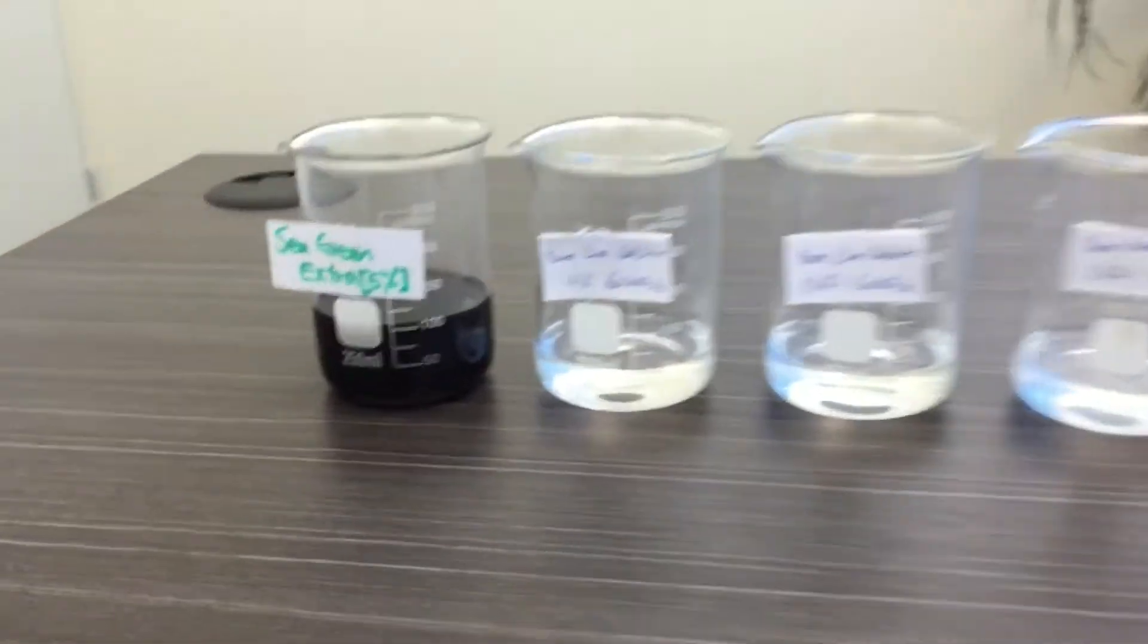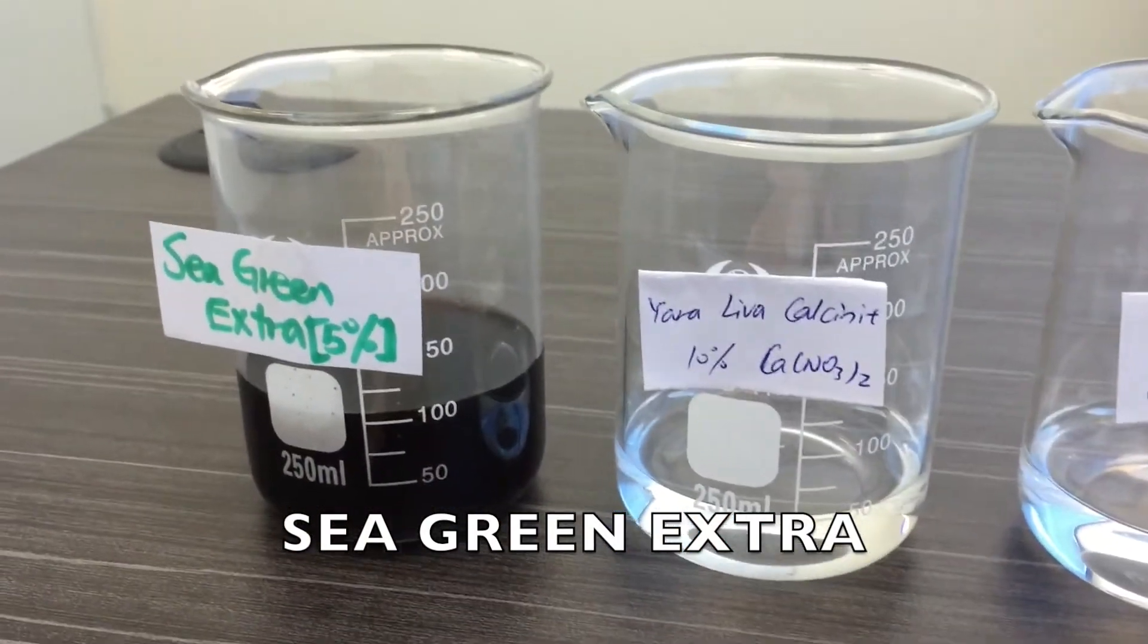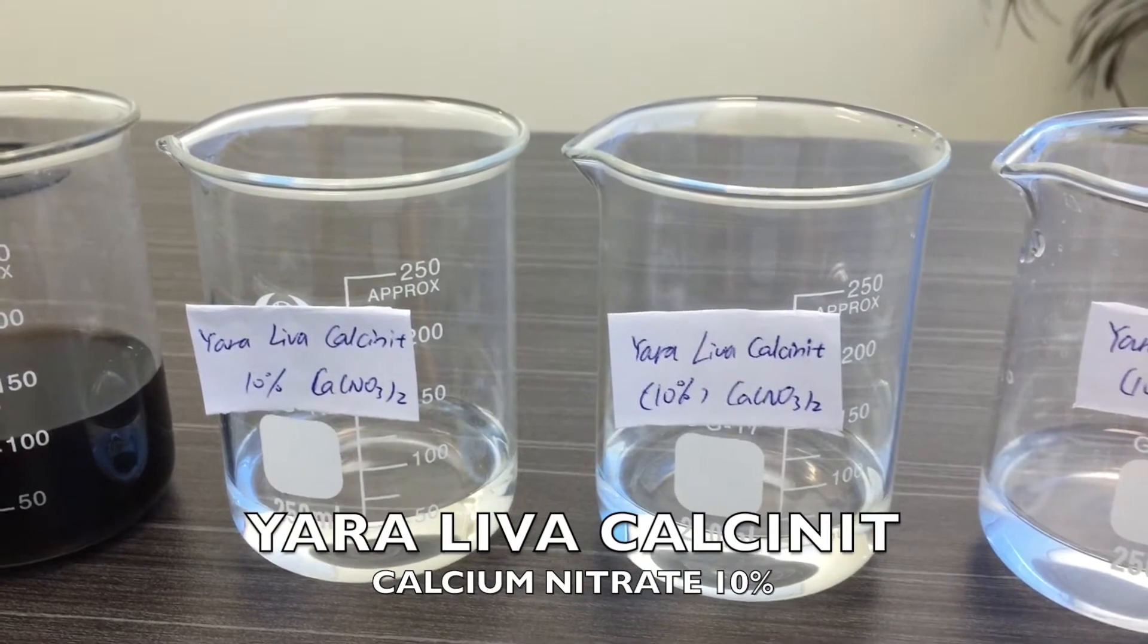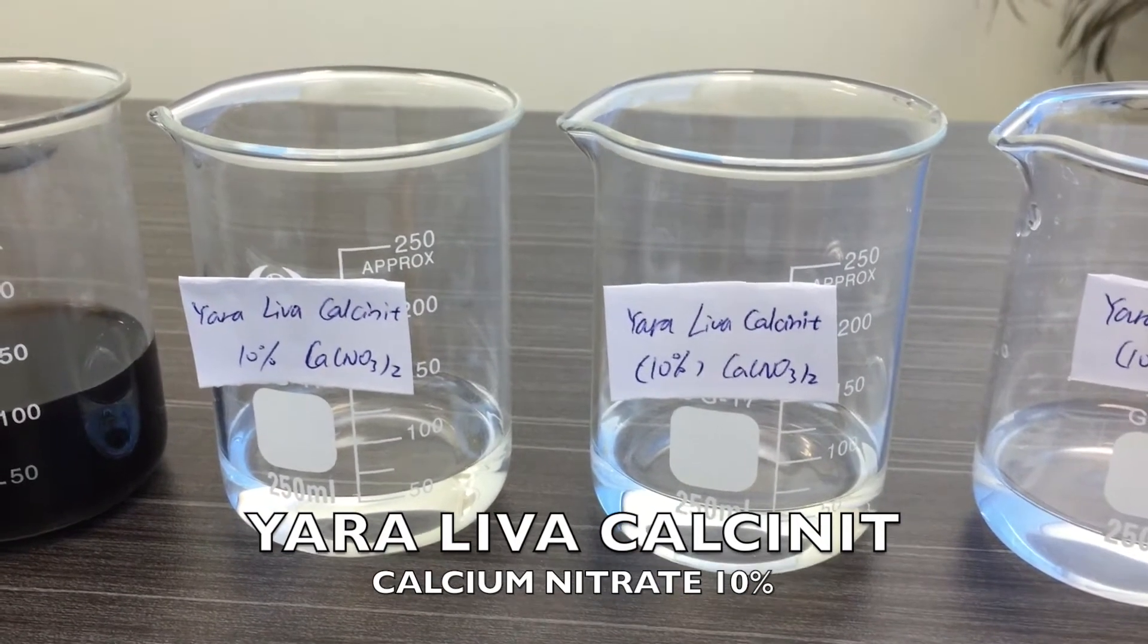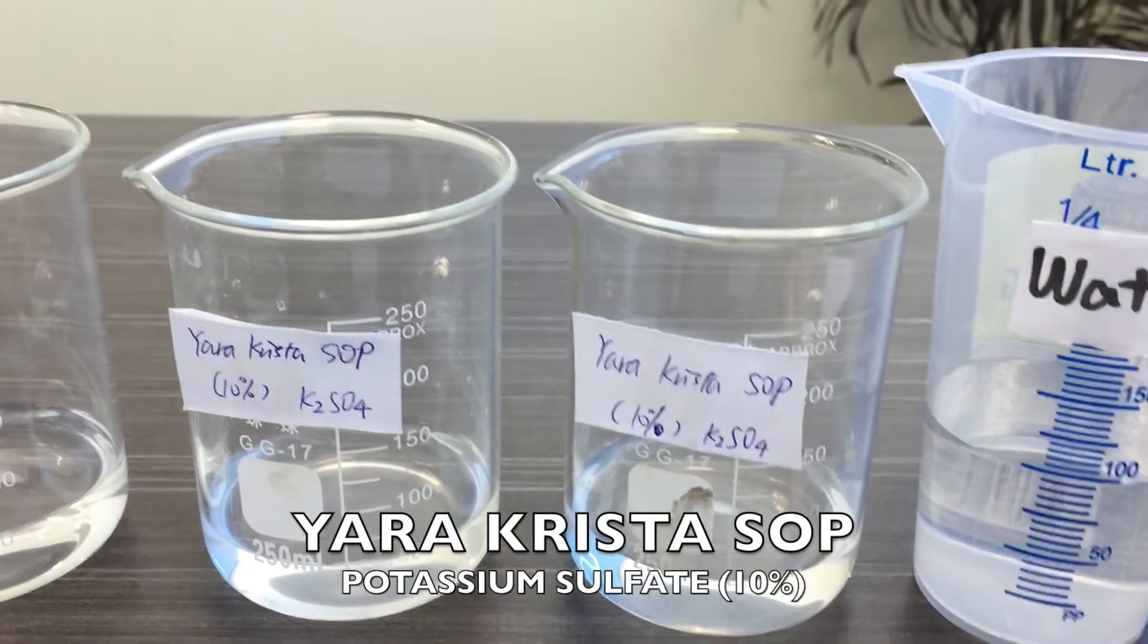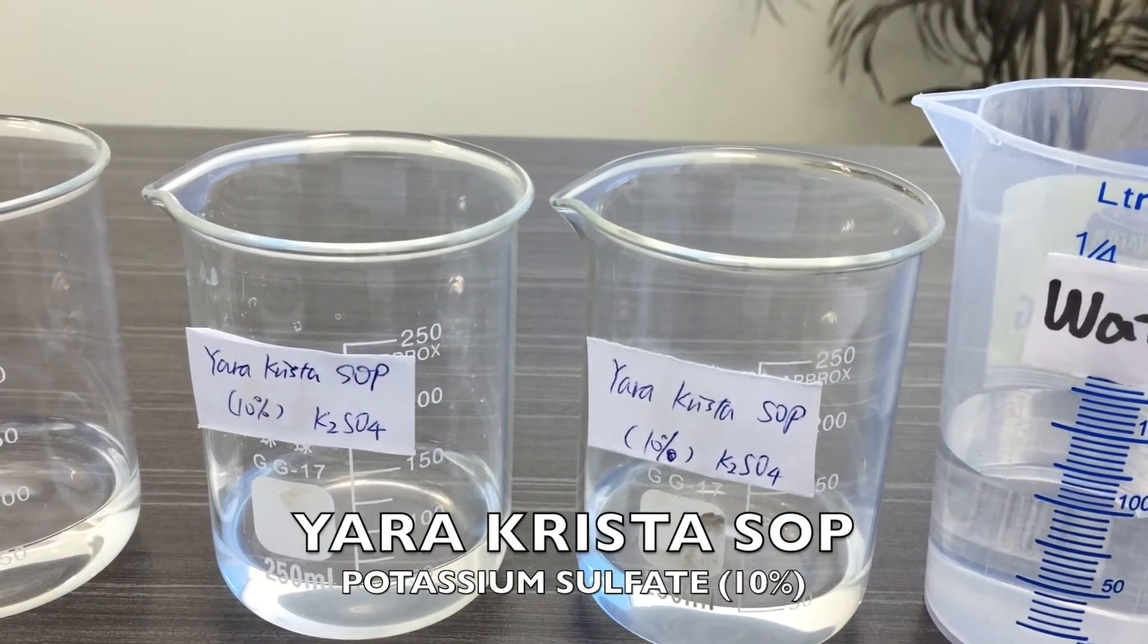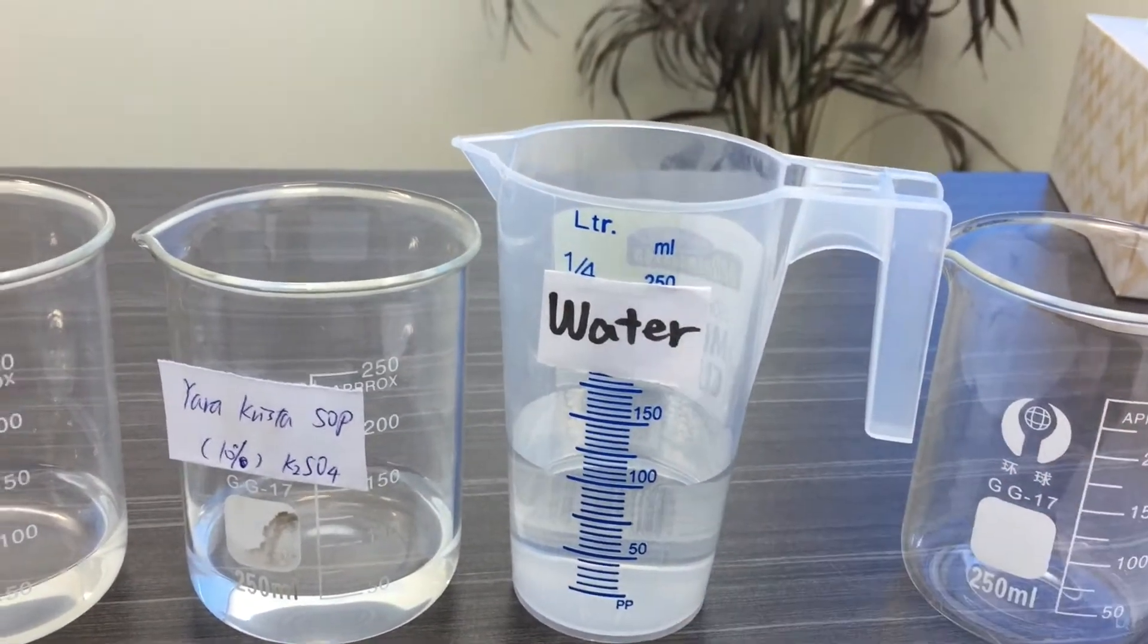Over here I've got six solutions. The first one is Sea Green Extract solution. In this beaker is Yara Liva Calcinit with a concentration of 10% calcium nitrate. In this beaker I've got Yara Crystal SOP with a concentration of 10% potassium sulfate solution. And over here I've got 100 ml of clear water.